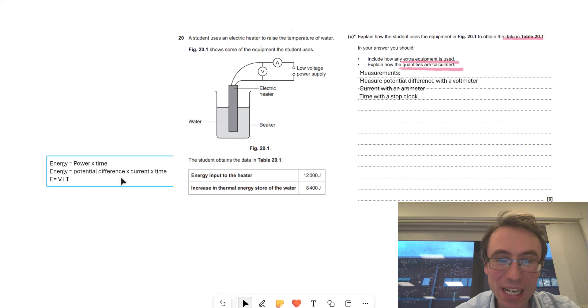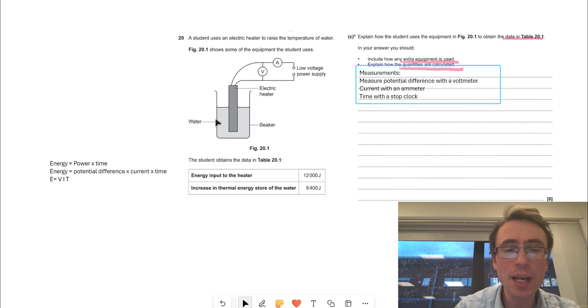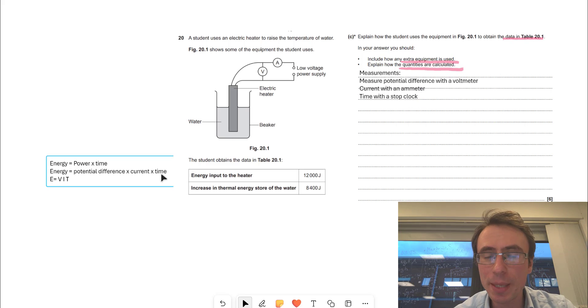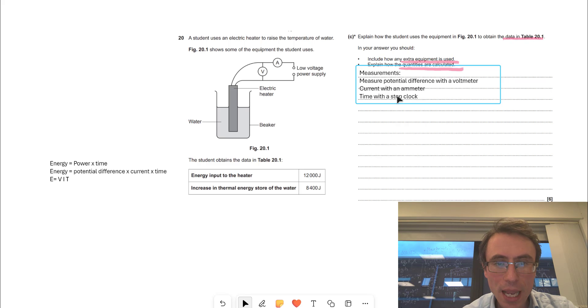We're going to measure the potential difference, or V, in this equation with a voltmeter. We're going to measure the current with an ammeter, and then we're going to measure the time, T, with a stop clock.